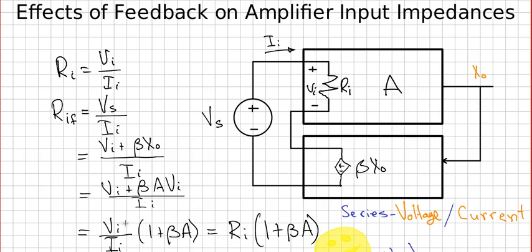And noticing that Vi over Ii is equal to the input resistance from the original circuit, we have the input resistance after feedback is equal to the input resistance before feedback times this quantity 1 plus beta A.